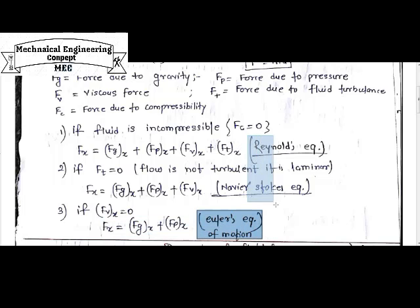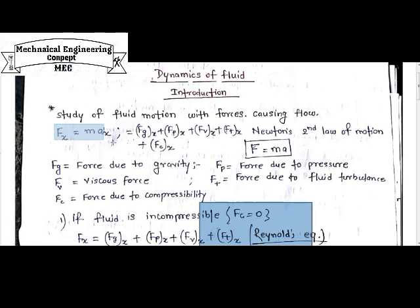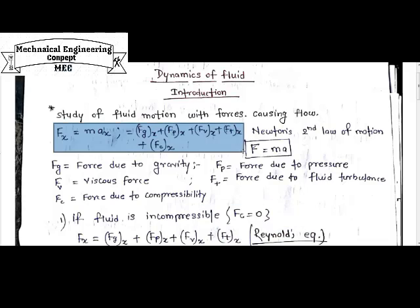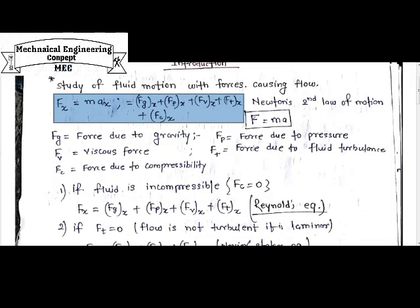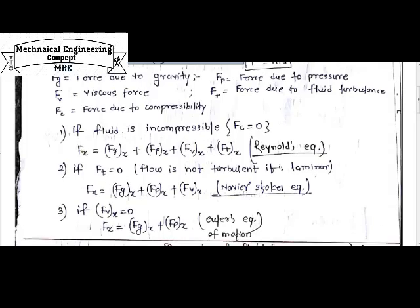So these are the three basic types of motion equations for fluid dynamics, derived by considering different combinations of pressure force, gravity force, viscous force, turbulent force, and compressibility force. This gives us the Reynolds equation, the Navier-Stokes equation, and the Euler equation — the basics of dynamics of fluid.